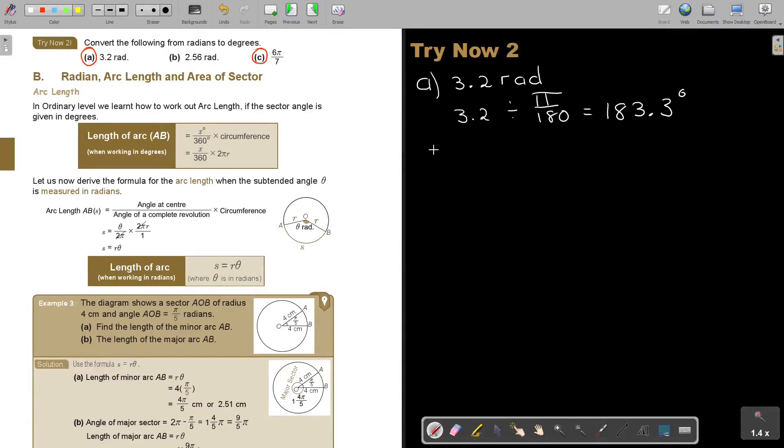So it's 6π over 7. I'm going to do this one a little bit different and multiply with 180 over π. You see what happens - it's cancelling out.